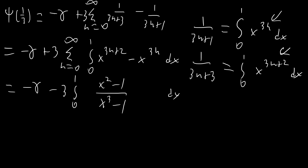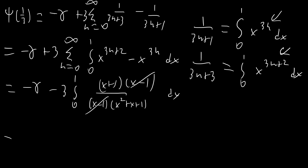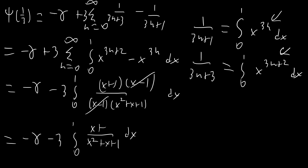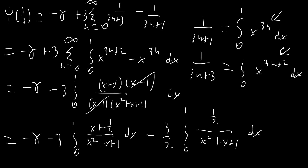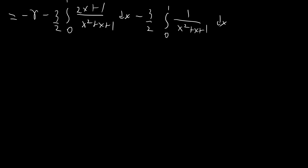Now we just have to evaluate the integral. The first thing we do is factor x minus one on the top and bottom, write everything in factored form, and cancel that factor. We end up with negative gamma minus three times the integral from zero to one of x plus one over x squared plus x plus one dx. We reorganize the numerator as x plus one half, writing the integral as two parts: the first part has two x plus one in the numerator, which is the derivative of x squared plus x plus one. That integrates to negative three halves times the natural log of x squared plus x plus one.